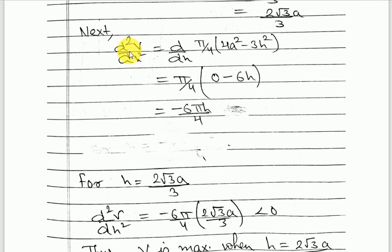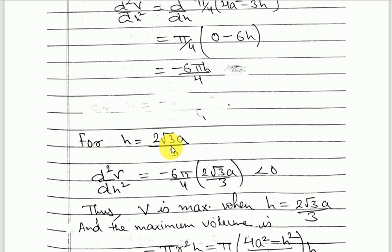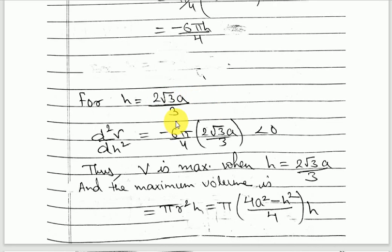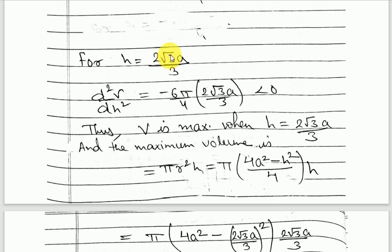Evaluating the second derivative at h = 2√3·a/3: since a is a positive radius, 2√3/3 is positive, and 6π/4 is positive, the overall result is negative. Since the second derivative is less than zero at h = 2√3·a/3, the volume is maximum when h equals 2√3·a/3.